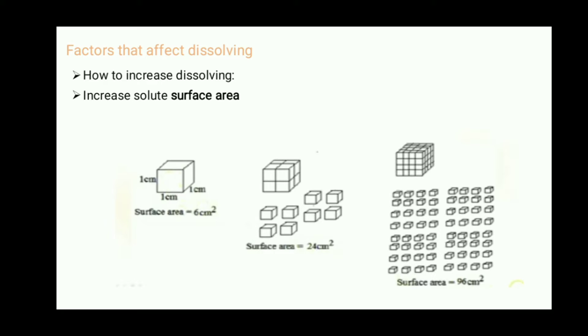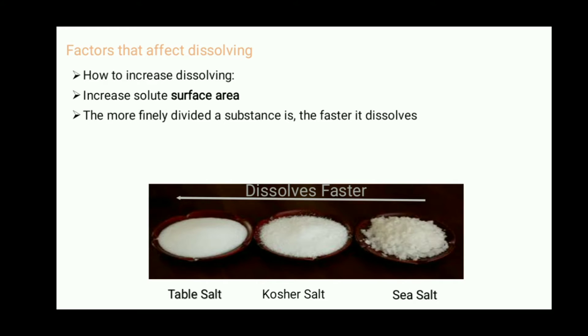Six centimeters to 24 to 96. This one will dissolve fastest. The more finely divided a substance is, the faster it's going to dissolve. Here's an example: three types of sodium chloride - table salt, kosher salt, and sea salt. As you can see, sea salt has the largest crystals and table salt is almost finest divided. From right to left, sea salt will dissolve slowest compared to kosher salt.